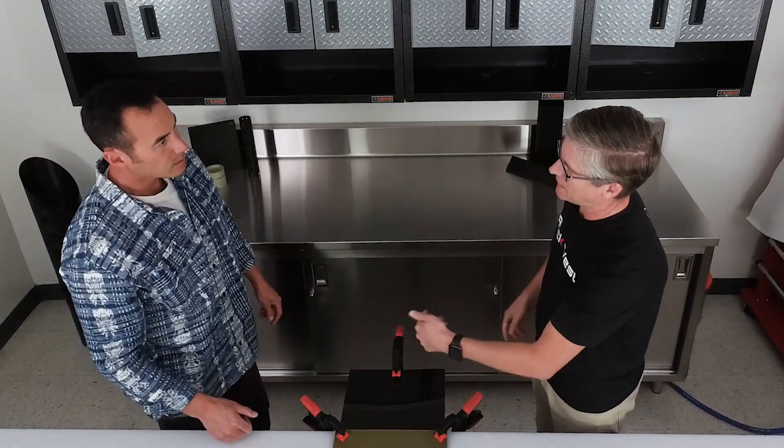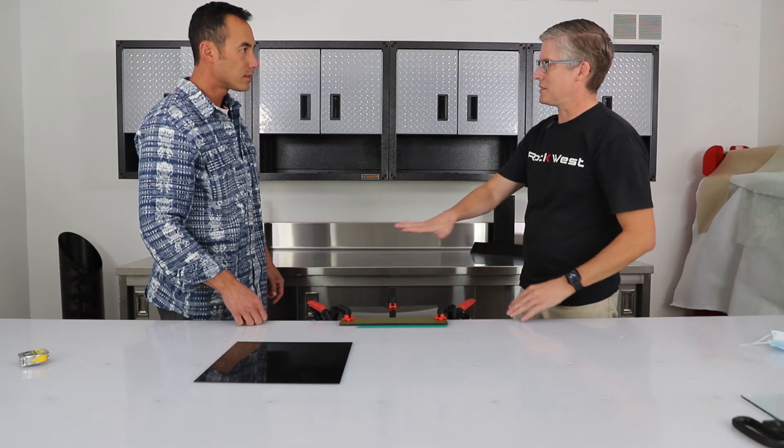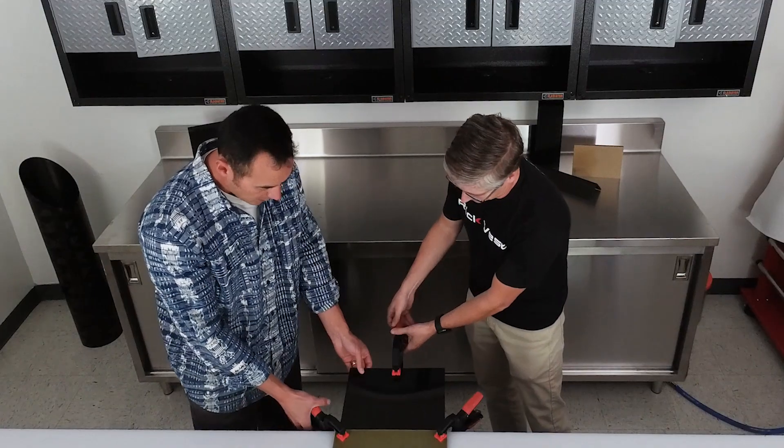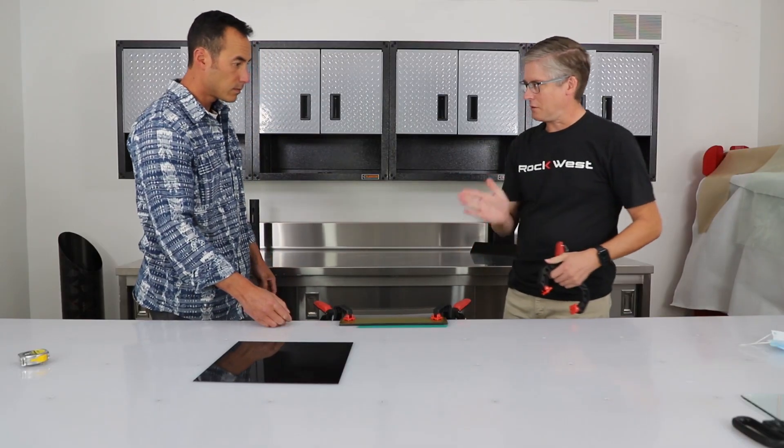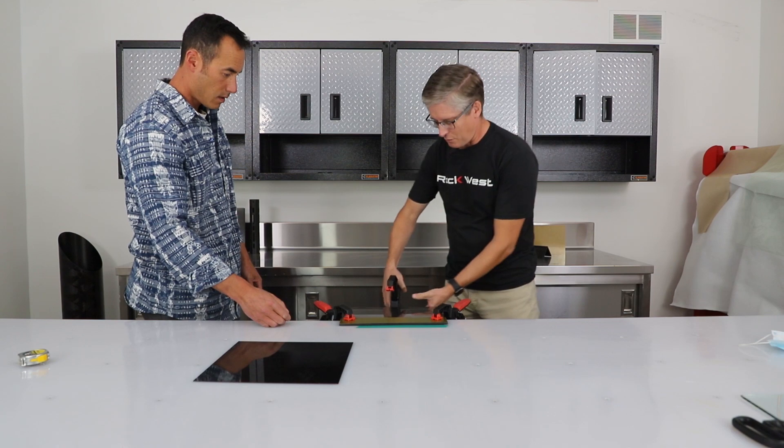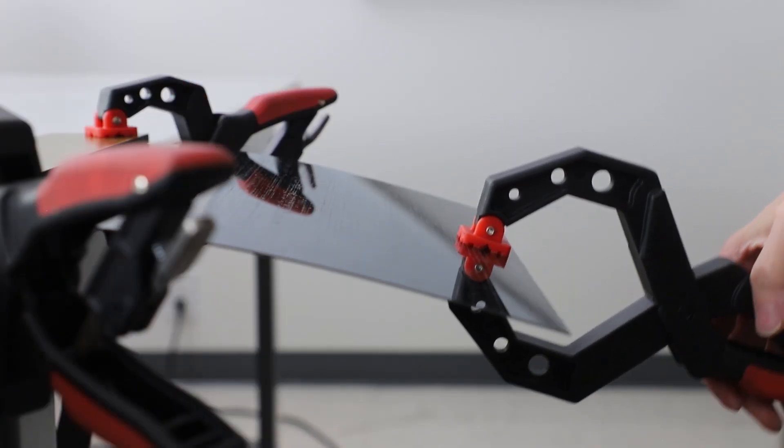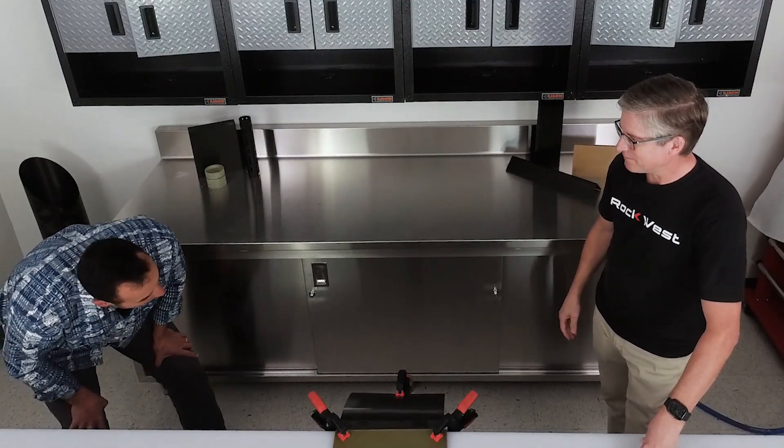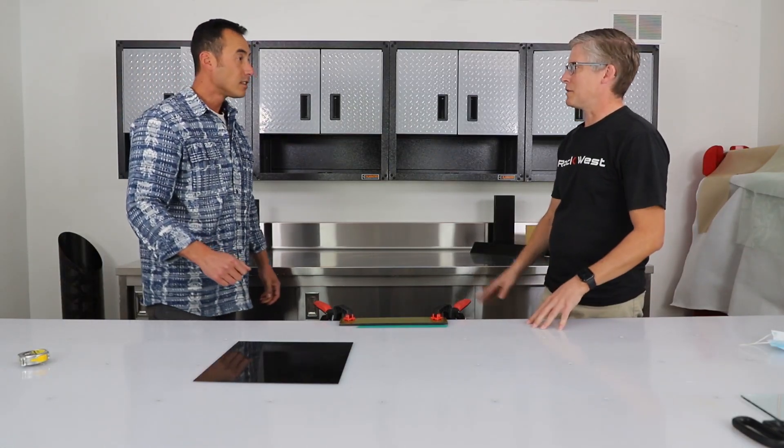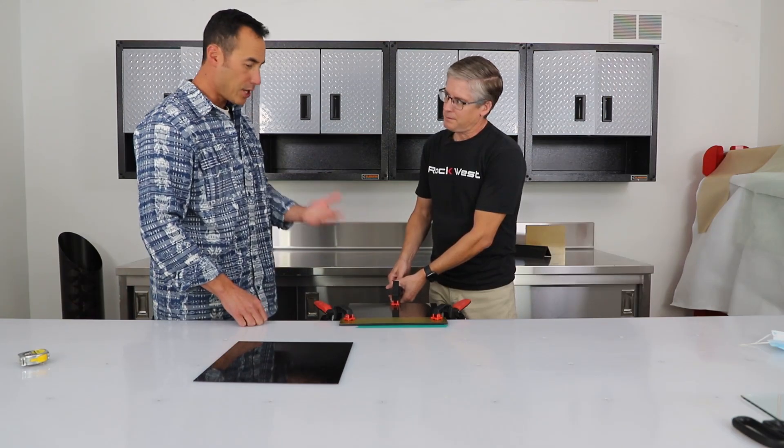Rotate it 90 degrees. Now this one, the direction is going this way, so we should see quite a bit of stiffness change. Oh wow, way more flexible. Amazing isn't it? Yeah, that's just 50% less fibers in one direction. So depending on the application that you need the panel for, you can change the orientation of the fibers.